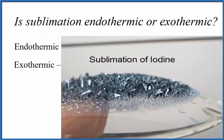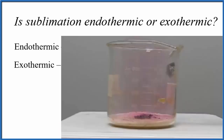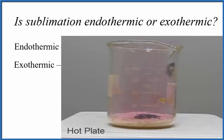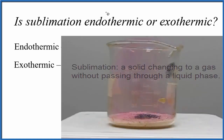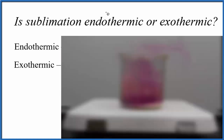For sublimation, that's when we have a substance that's changing directly from a solid to a gas — there's no liquid phase, and it's a physical process. Here I've put iodine crystals in a beaker with sand, and I'm heating it up. That purple gas is the iodine gas being sublimed — changing from the solid to the gas. There's no liquid phase.